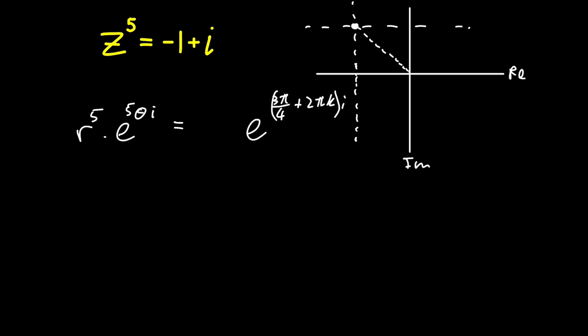And I said plus two pi k because if we add two pi, we're adding 360 degrees, we're adding a full revolution. So if I add a full revolution to this point, we come back to the same point.